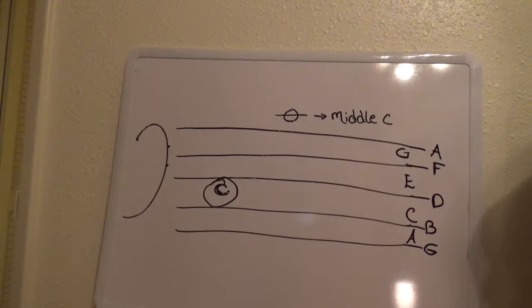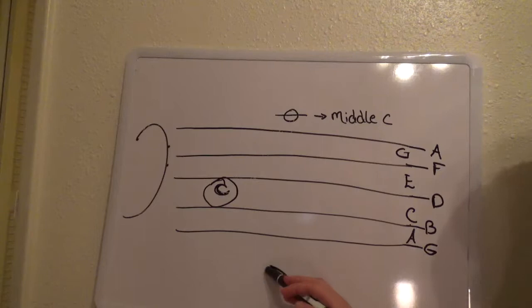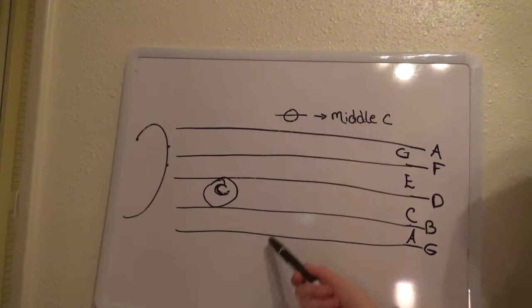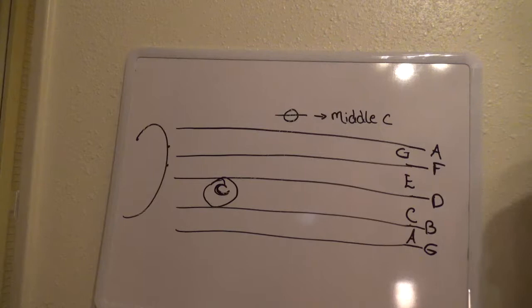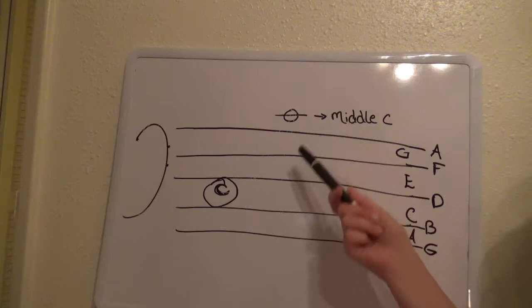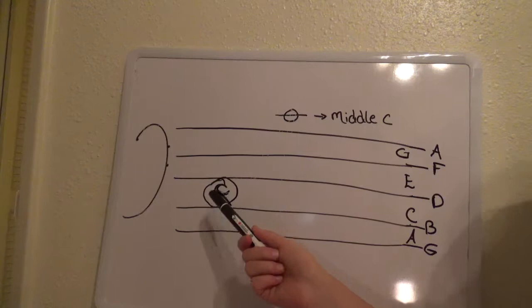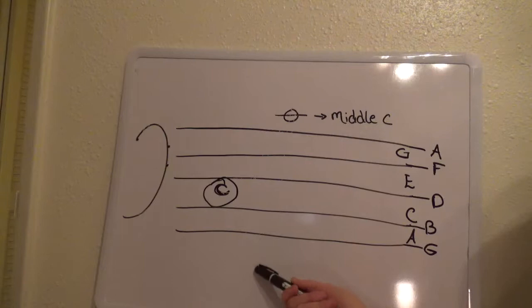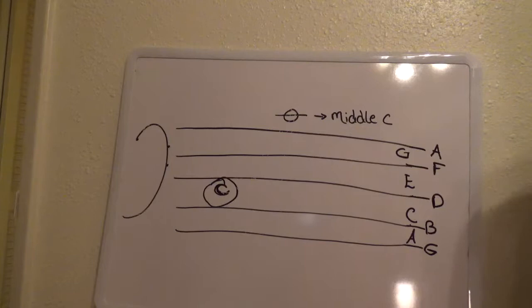So that middle C that was located down here when we were reading the treble clef — because we're going lower in the harp — that note is going to be right here, above the bass clef. So when you're locating notes on the bass clef, you're still going to use middle C, but you're going to be sort of going down from middle C instead of up. And just like the treble, this really does look like the harp. This note is going to be a lot lower than this note, because just like the harp, these notes down here are going to be lower.